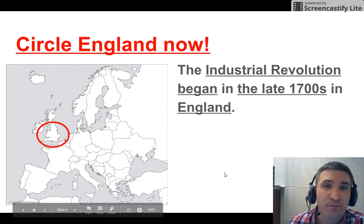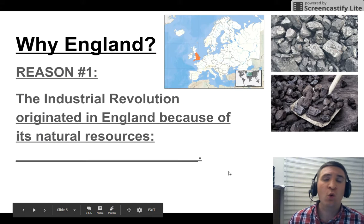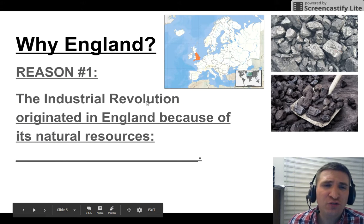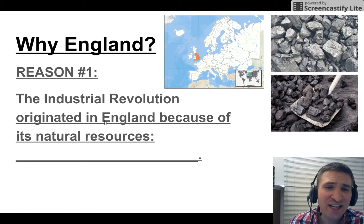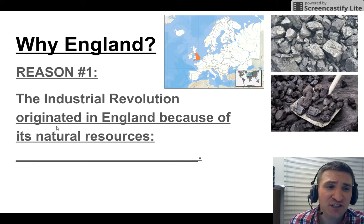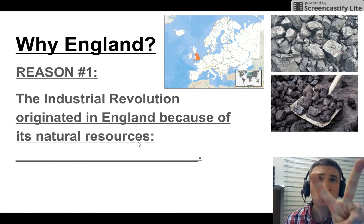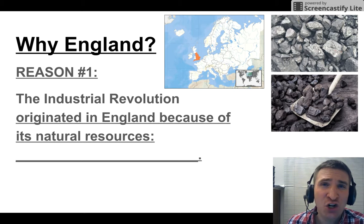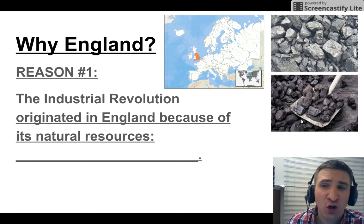Why England? Reason number one: the industrial revolution originated in England because of its natural resources. Two natural resources — iron ore, O-R-E, and coal. These two were in abundance in England.